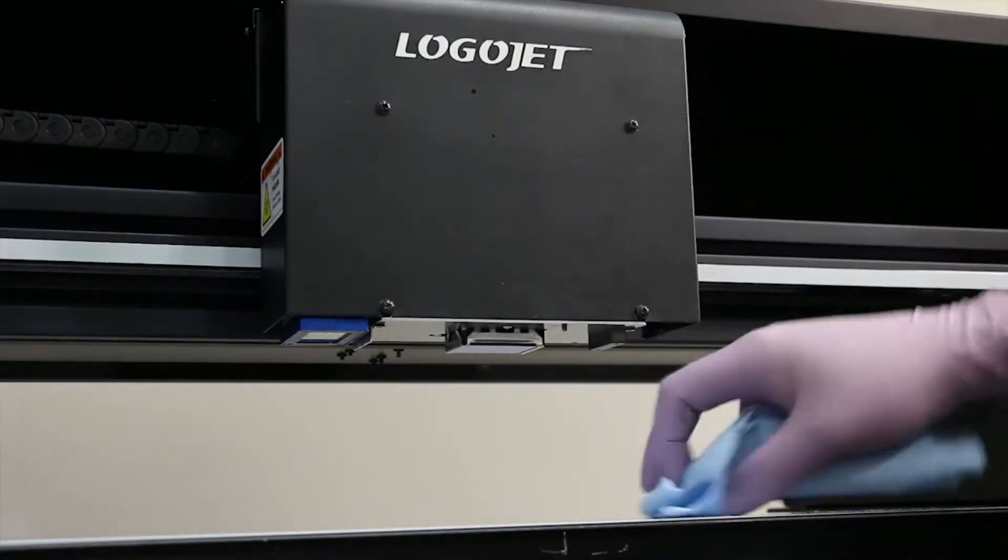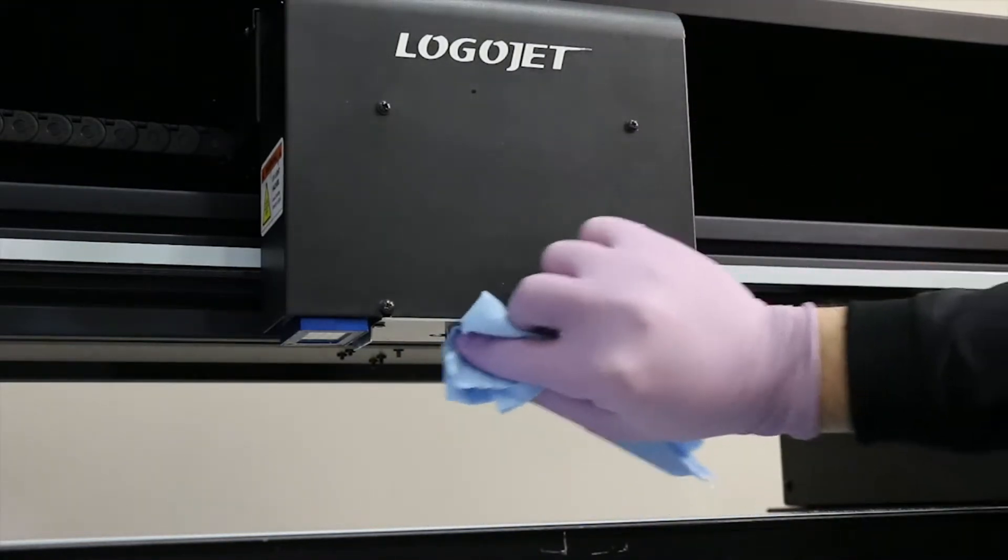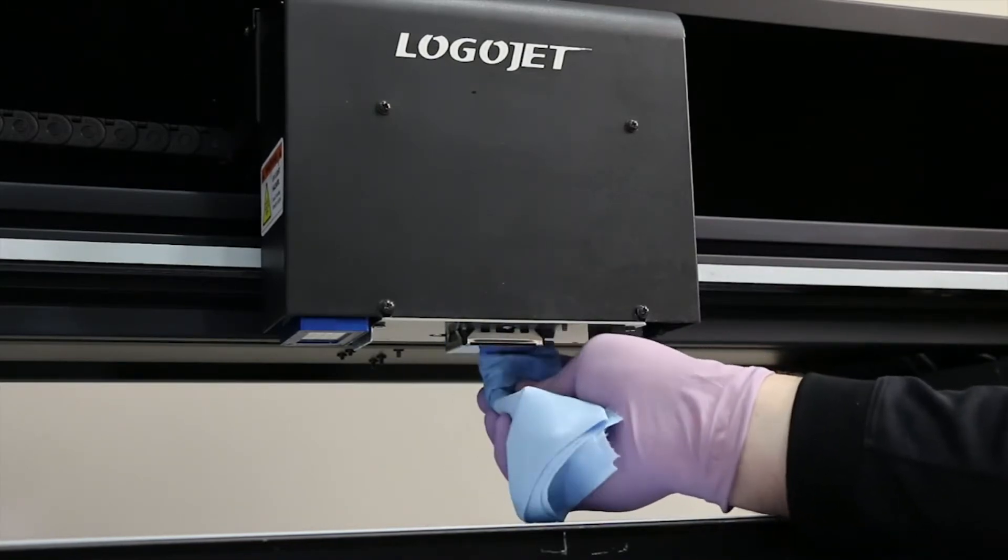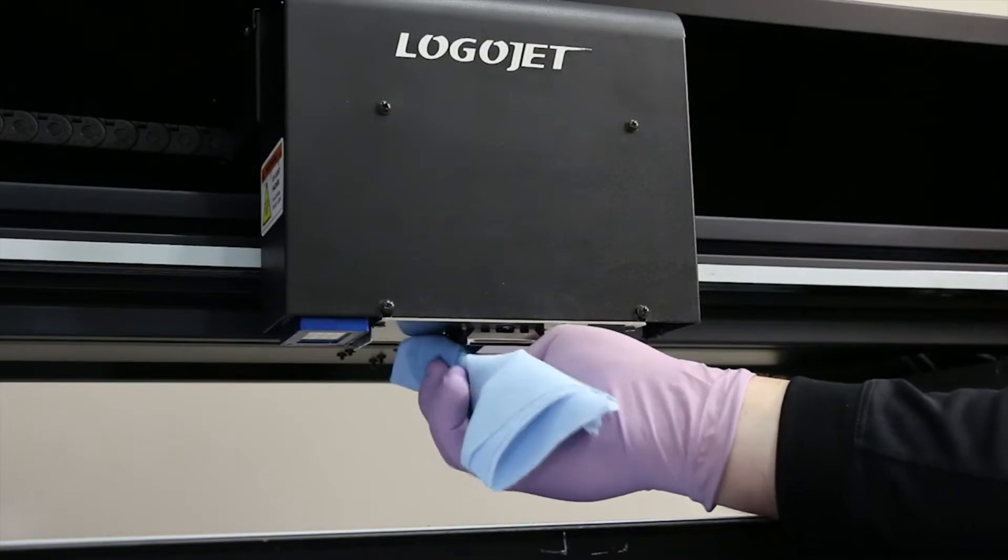Then we're going to focus on the front, back, and sides of the print head itself, making sure you get everything off. You do not want to leave any lint behind, so make sure that you get everything off of there completely.